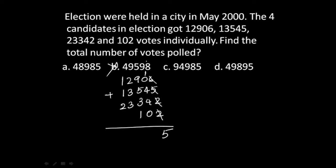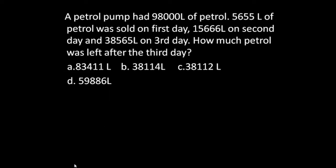At this point we can eliminate option B — it ends with 8, so it's wrong. The correct answer must be A, C, or D. Continuing: 4+4+1 (carry) = 9. There is only one option ending with 95 — that is option D. Mark that as your answer and move on. Don't waste time solving the rest. The correct answer is 49,895.